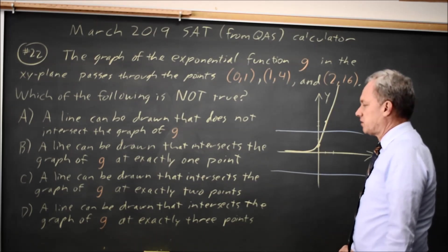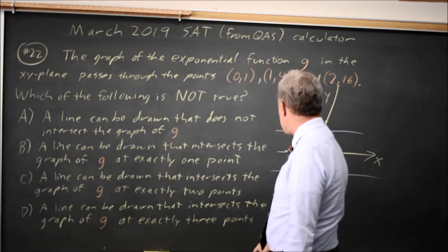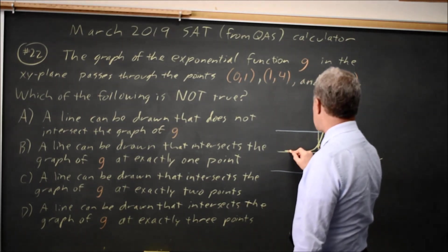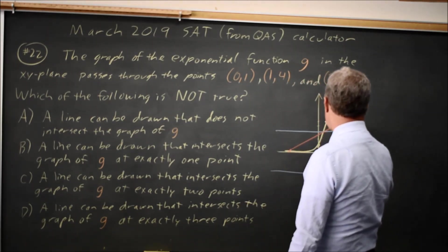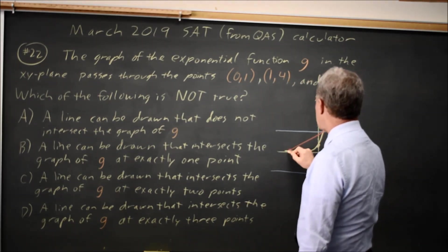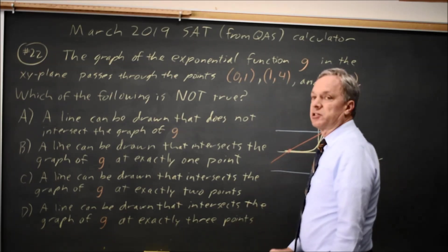Choice C, a line can be drawn that intersects the graph at exactly two points. If I choose, for example, this point and that point, I have a line that intersects at exactly two points.